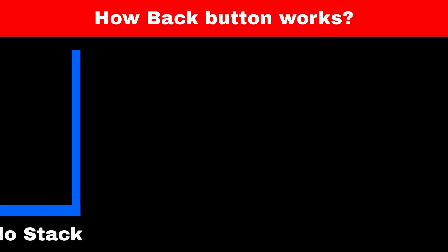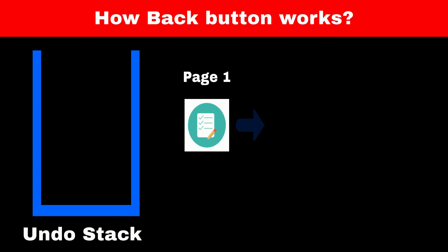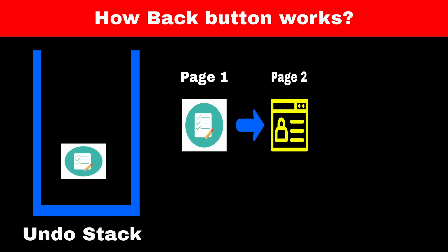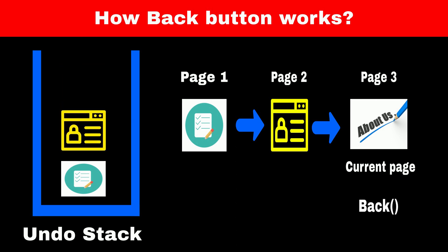Consider each web page as an object, and we have to store these objects into the stack. Let's call this stack the undo stack. When we move from page 1 to page 2, page 1 will be added to the undo stack, and when we navigate from page 2 to page 3, page 2 will be added to the undo stack. Now we are on page 3, so whenever we press the back button we display and remove the page which is at the top of the stack.